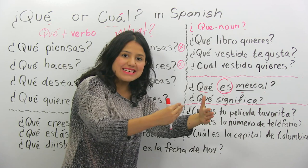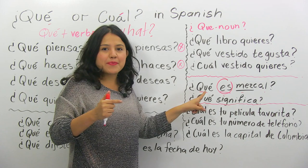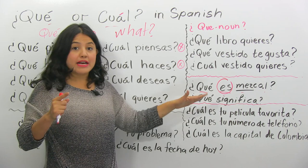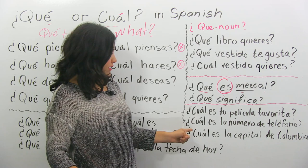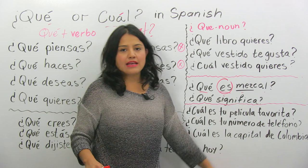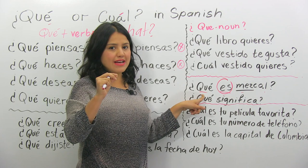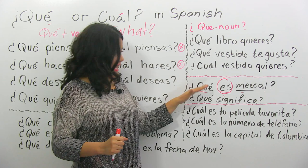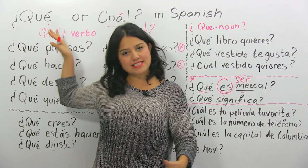Because when you say ¿cuál es? — if you want to ask a definition, if you want to know what this is or what that is — if you are asking for a definition, you're going to say ¿qué? But if you are using other verbs, just for 'es' you're going to use qué. For the rest, you're going to use ¿cuál? For example: ¿cuál es tu película favorita? — what's your favorite movie? ¿Cuál es tu teléfono? — what's your telephone number? ¿Cuál es la capital de Colombia? — what is the capital of Colombia? But let's start with more specific examples.